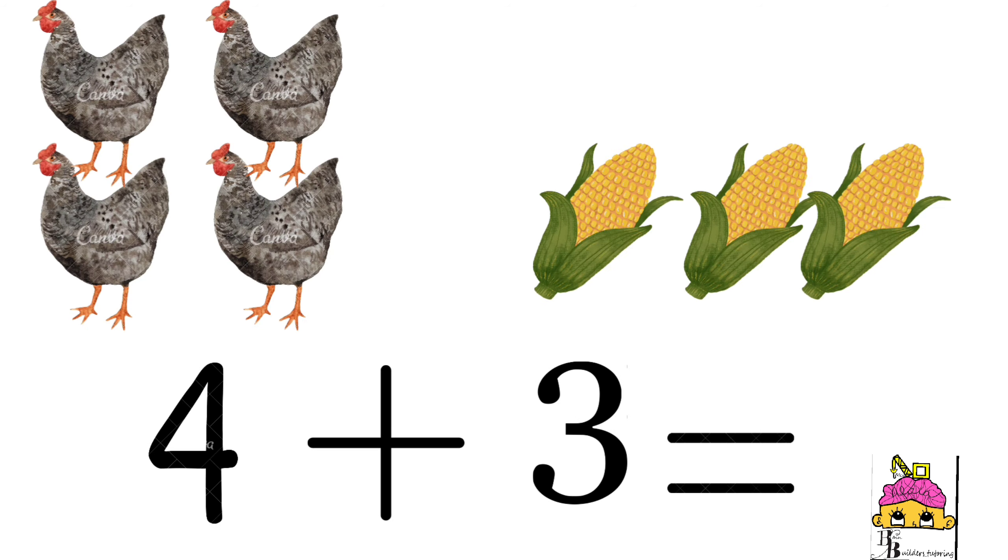Can you figure out what's 4 plus 3? Put them all together. 4 plus 3 equals 7 when we put them together.